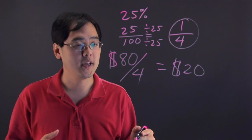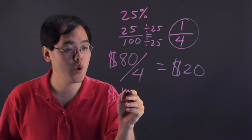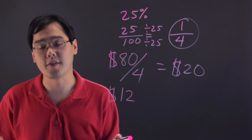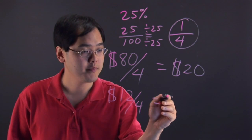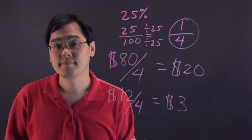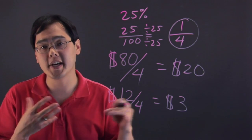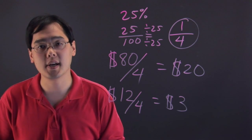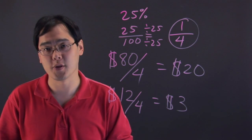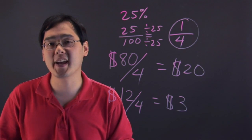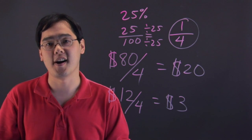Now, for something a little cheaper — for example, if something was $12 and it was 25% off — go ahead and divide that by 4 and you'll get $3. Now, some things that aren't quite as divisible by 4, you'll have more decimals as part of your 25% discount calculation, but as you can tell, it's a pretty straightforward process. I'm Jimmy Chang and there are a couple of illustrations on how to calculate 25% off.